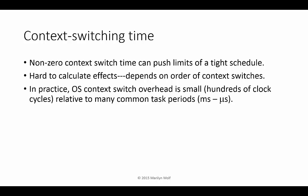Non-zero context switch times can push the limit of a very tight schedule, and it can be hard to calculate the effects, in part because it depends on context switches, particularly when we take into account the cache. But in practice, context switch time is a few hundred clock cycles, and task periods are often microseconds to milliseconds, so we can often ignore the effects of context switching.